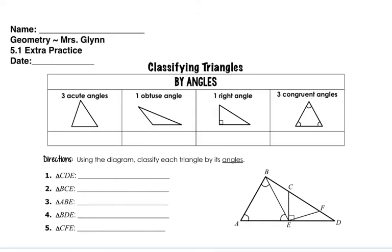Just a little review: three acute angles mean that it's acute. If there is one obtuse angle, that means it is obtuse. If there's one right angle, it means it's a right triangle. And if there are three congruent angles, that means it's an equilateral triangle.